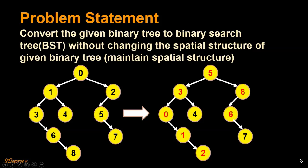First of all, what is a binary search tree? In a binary search tree, all the elements in the left subtree are less than or equal to the root element, and all the elements on the right subtree are greater than the root element, which is not true in the given binary tree. You can see there are elements like 6 and 8 on the left subtree of the root.